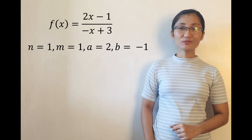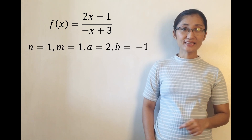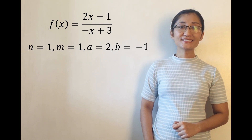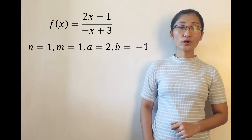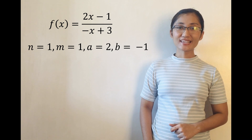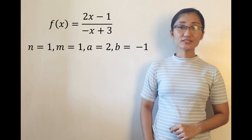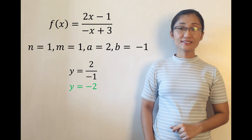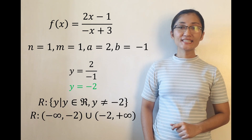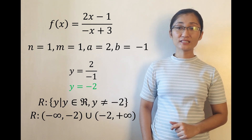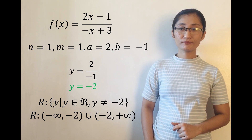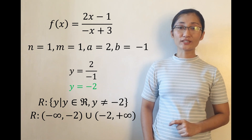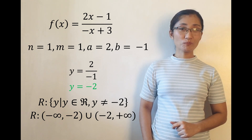For the range: since m equals 1 and n equals 1, a equals 2, and b equals negative 1. Since n equals m, the horizontal asymptote is y = a/b. That is, y equals 2 over negative 1, or simply y equals negative 2. Thus, the range is y such that y is an element of real numbers but y is not equal to negative 2, or the union of intervals from negative infinity to negative 2 exclusive, and from negative 2 exclusive to positive infinity.